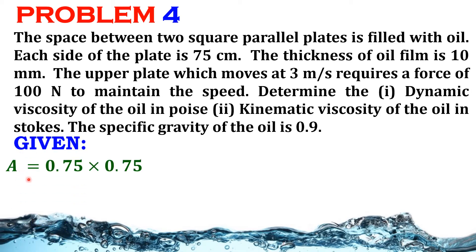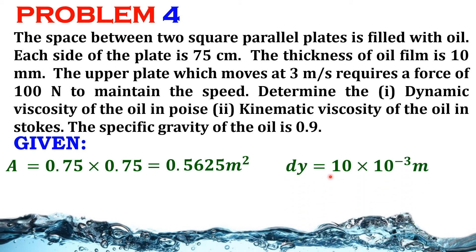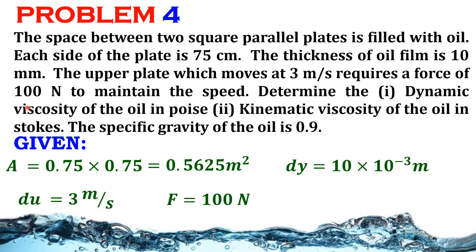Given: A = 0.75 × 0.75 = 0.5625 m². dy = 10 × 10⁻³ m. The thickness of the oil film is 10 mm. Assuming initial velocity is zero, du = 3 m/s. Force required F = 100 N. Specific gravity S = 0.9.